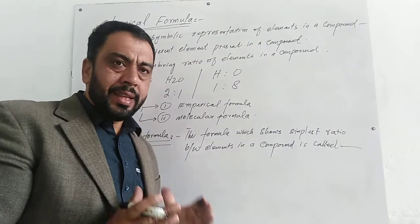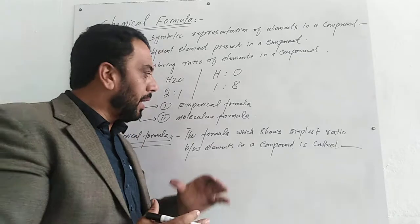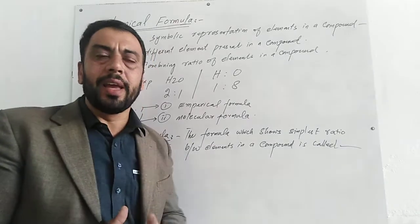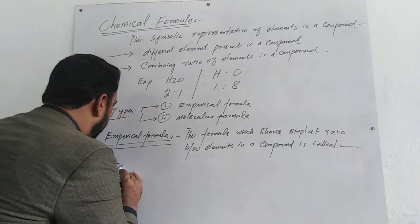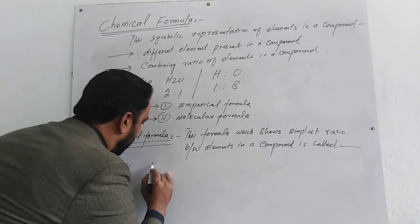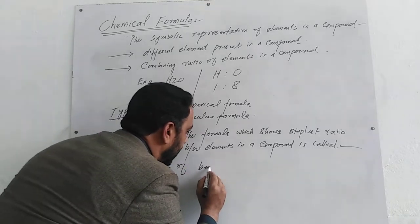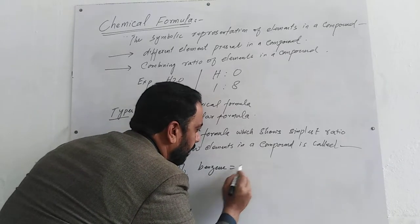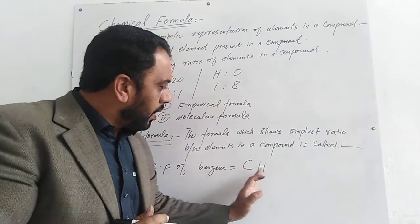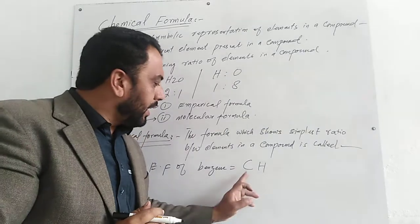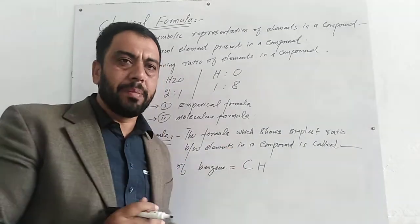It shows all the atoms present, but یہ ہمیں exact number کے بارے میں نہیں بتاتا. لیکن ہمیں یہ بتاتا ہے کہ اس میں یہ element یا یہ atom موجود ہے. مثال کے طور پر, empirical formula of benzene is CH. یہ ہمیں بتاتا ہے کہ یہ carbon اور hydrogen کا بنا ہے، لیکن carbon اور hydrogen کے atoms کا exact number نہیں بتاتا.